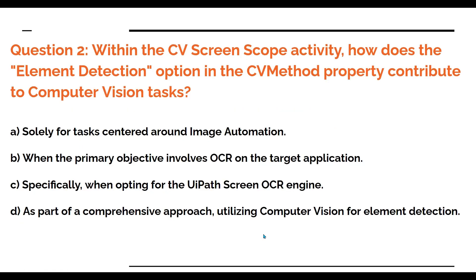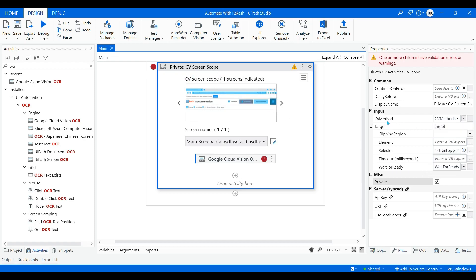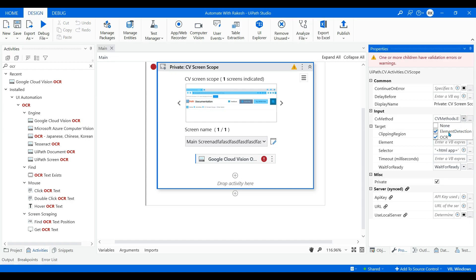Now let's see the second question. Within the CV screen scope activity, how does the element detection option in the CV method property contribute to computer vision tasks? This question is about element detection in the CV screen scope activity. On screen, this is the CV screen scope activity, and if you go to the CV method property, there is an option called Element Detection and OCR.